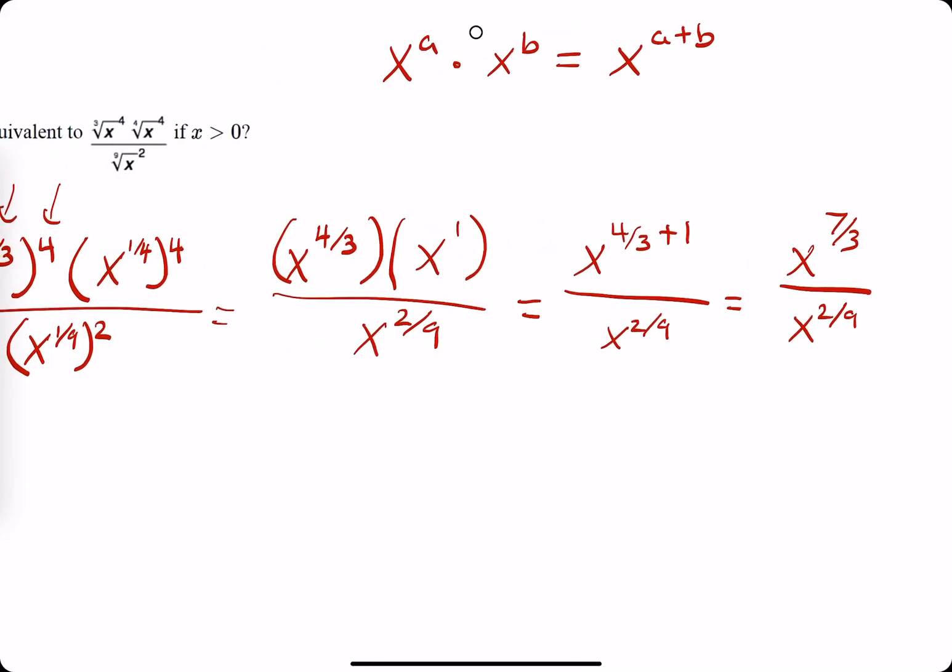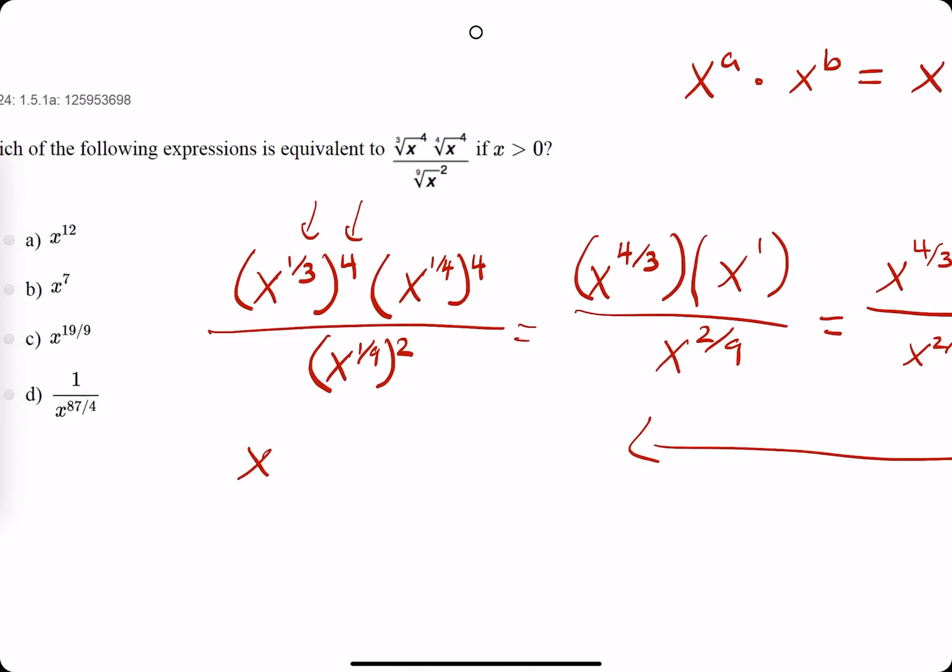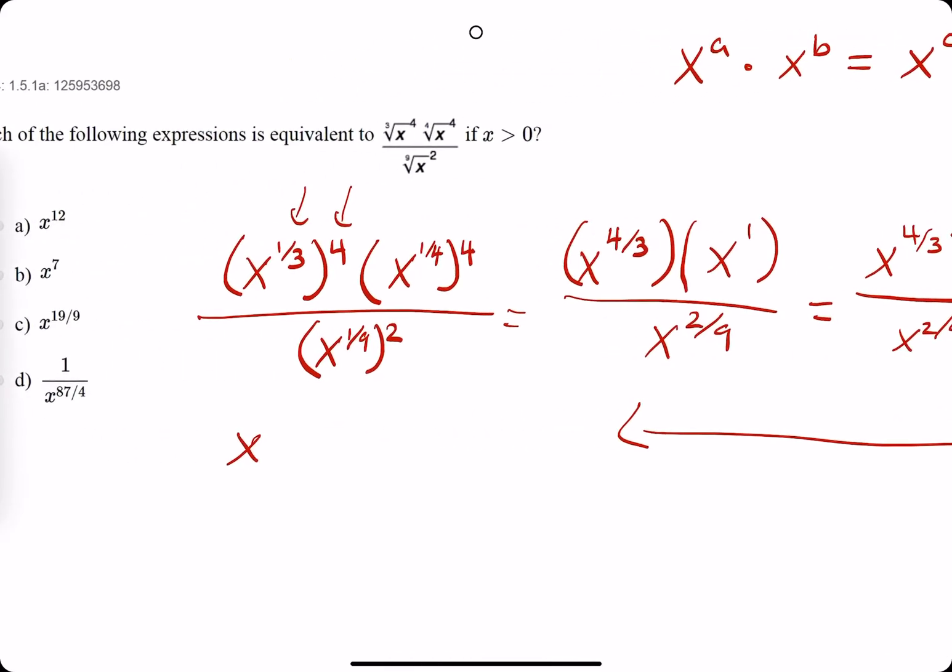Wow, okay. So I'm going to wrap this guy around here so we're not getting lost. So we have x to the seven-thirds over two-ninths. Okay, seven-thirds over x to the two over nine.